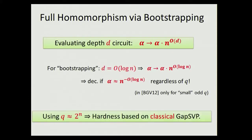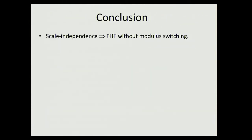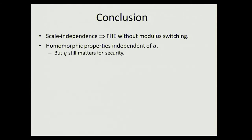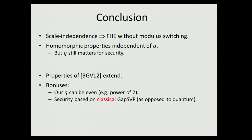This allows using Gentry's bootstrapping to get fully homomorphic encryption. It's sufficient to evaluate a circuit of depth O(log D), requiring α ≈ N^{−O(log N)}, and this holds regardless of Q. Since we can do this for any Q, we get classical hardness reductions for lattice problems that were previously only known in a quantum sense—taking Q large enough gives a classical, rather than quantum, hardness reduction. In BGV you could get something similar, but only for very special values of Q.